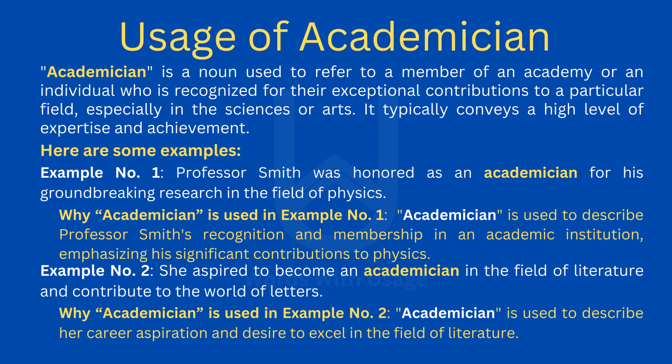Here are some examples. Example number one: Professor Smith was honored as an academician for his groundbreaking research in the field of physics. Academician is used to describe Professor Smith's recognition and membership in an academic institution, emphasizing his significant contributions to physics.